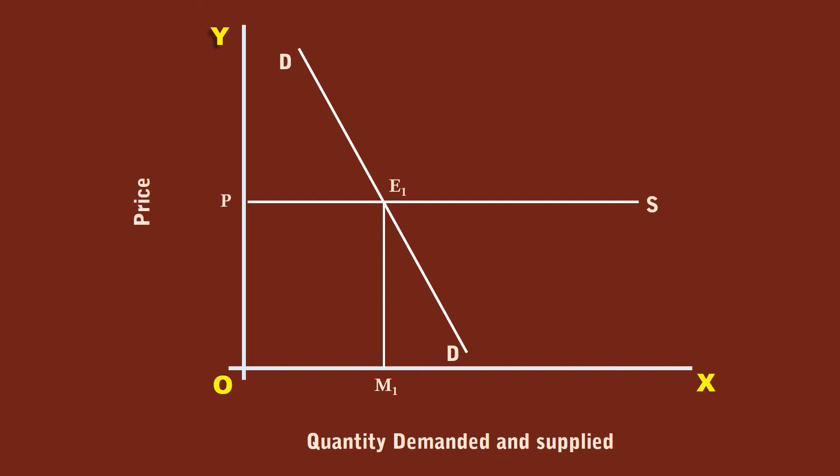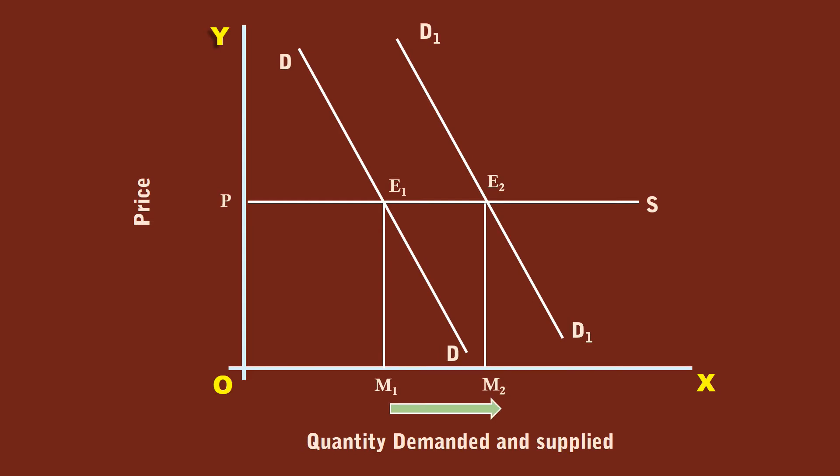With an increase in demand, the curve DD moves to the right and takes position at D1D1. The new demand curve cuts the supply curve at point E2. This is the new equilibrium point. The consumers buy M2 units, which is greater than M1. Since the supply is perfectly elastic, the sellers increase their production and meet the market demand in full at the existing price. The net result is quantity increases from M1 to M2 and the price remains at P — it doesn't change. The impact of increase in demand is fully absorbed by quantity.